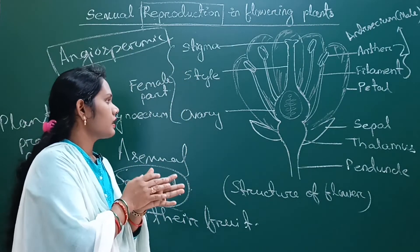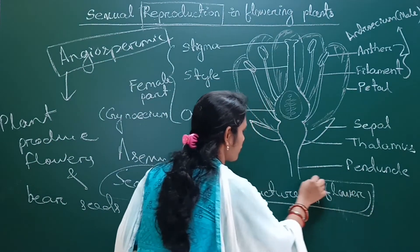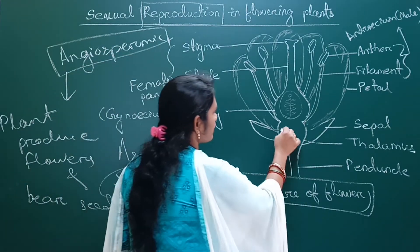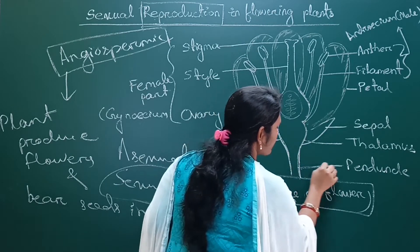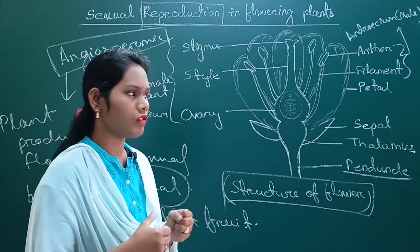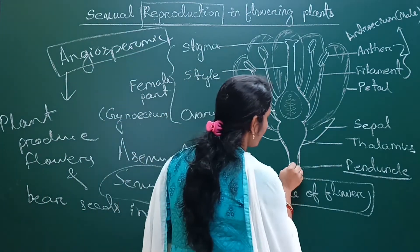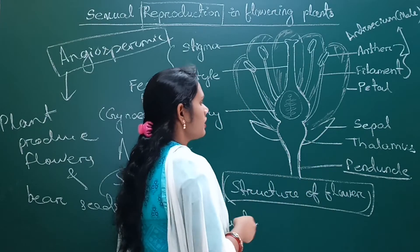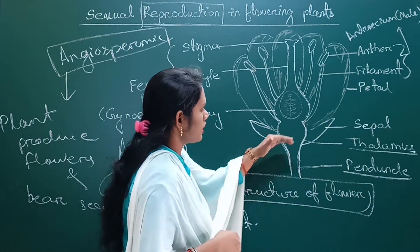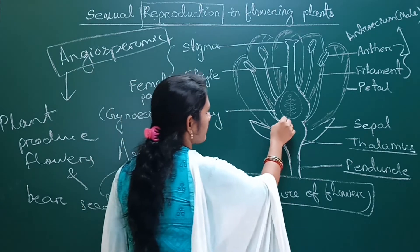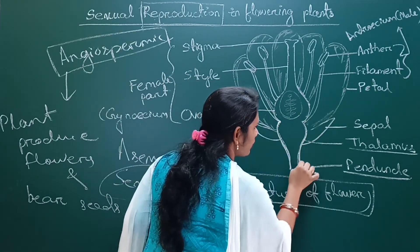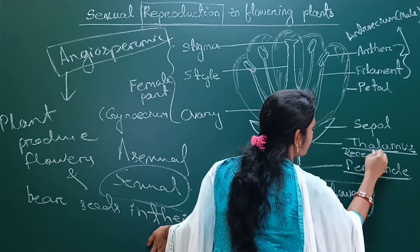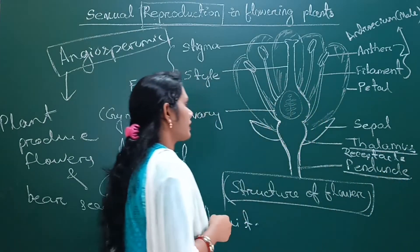Before we start the topic, let's look at the structure of a flower — what are the different parts of a flower. The starting part is called the peduncle, which holds the whole flower. The upper part of the peduncle is a swollen portion called the thalamus, which is also called the receptacle.